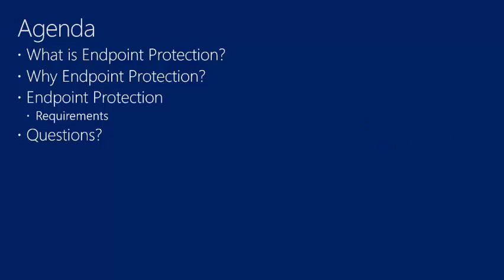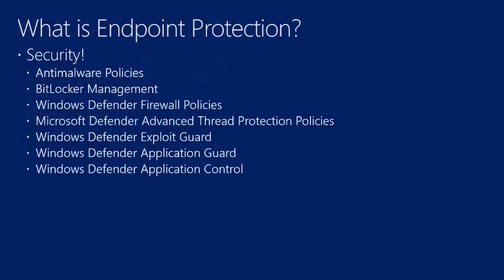So we're in the introductory session for endpoint protection. Endpoint protection is made up of several components. The first component — reflected in the order seen in the console — is anti-malware policies. This should be very familiar to most IT people: creating and managing anti-malware policies and settings related to that approach.